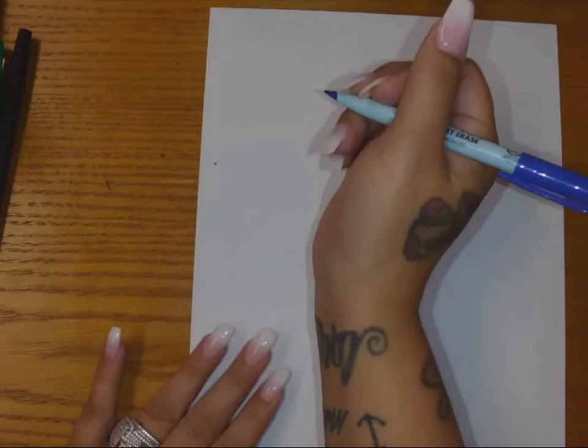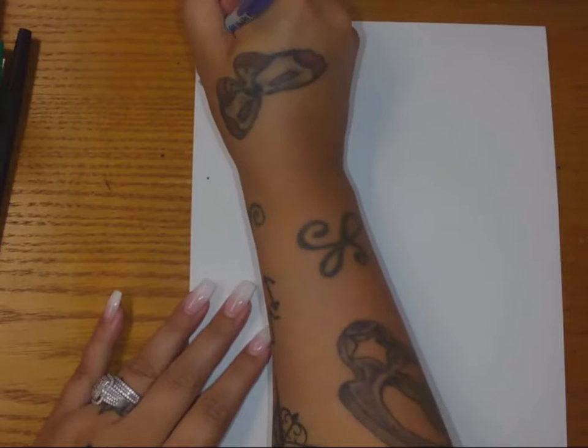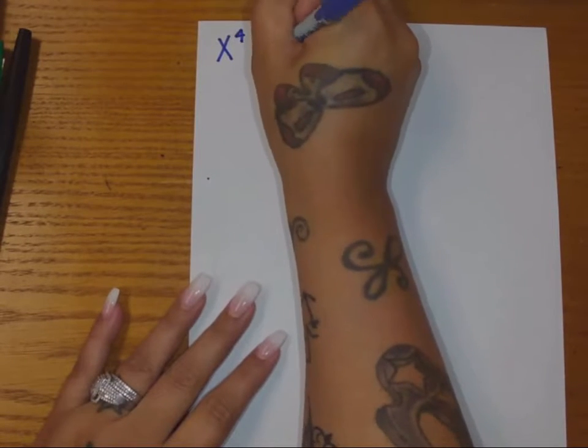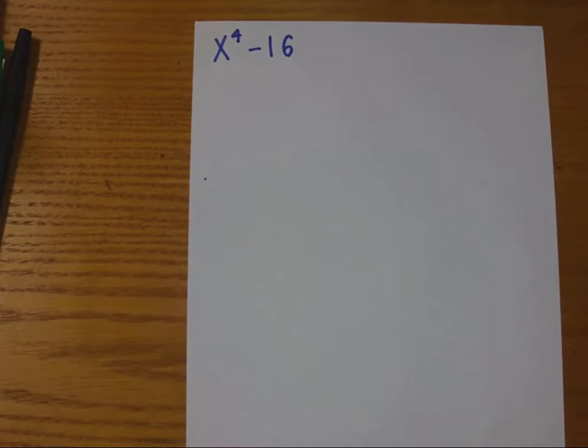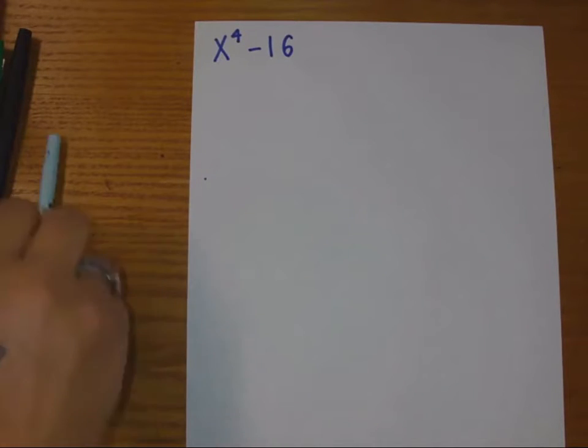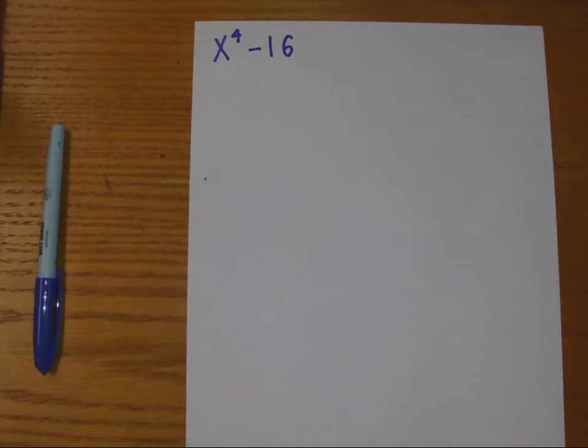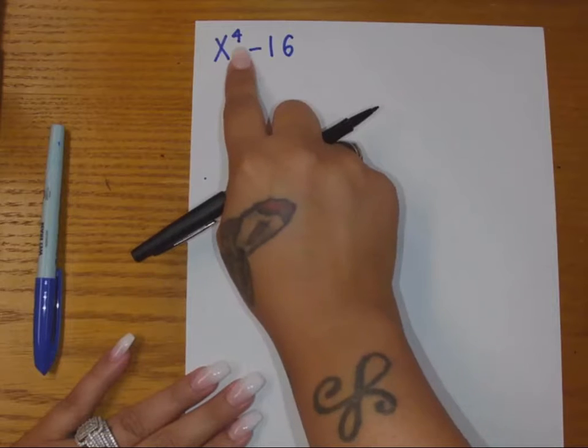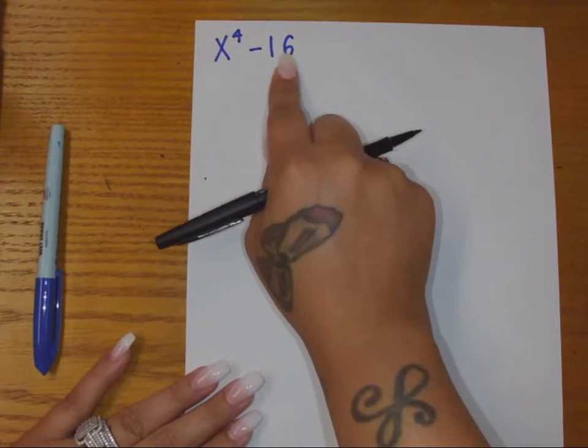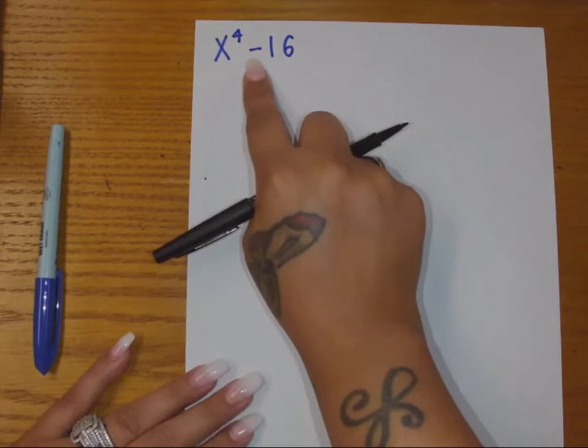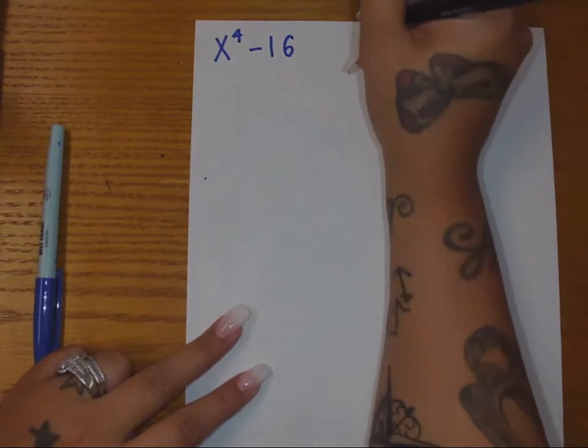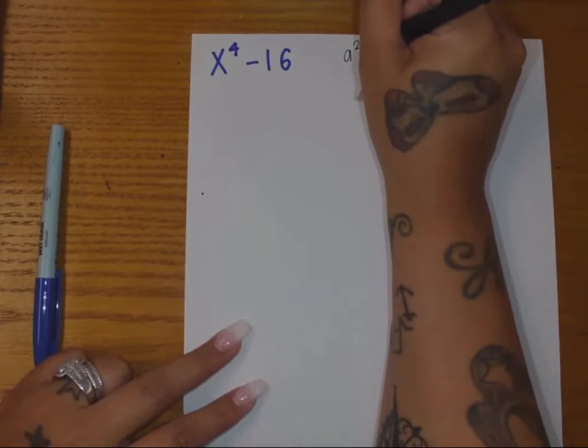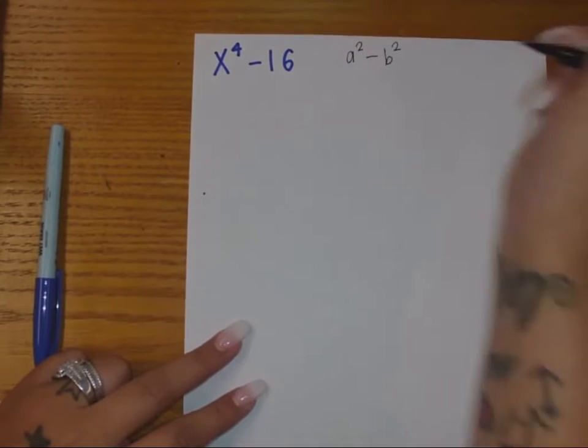Okay y'all, so we're going to look at this problem right here that says X to the fourth minus 16. All it tells us to do is to factor this. What we should notice is that X to the fourth is a squared term, 16 is a squared term, and there's a negative sign which would be a difference. So we have something squared, something else squared, and a negative sign in between them.